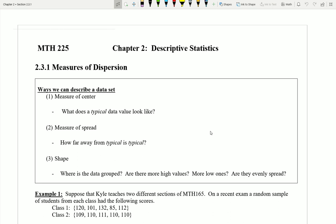In section 2.3.1, we're going to start to talk about other ways that we can measure a data set. Now we talked about these three ways that we can describe a data set in the last section. We talked about the idea of a measure of center. What does a typical data value look like? This was covered in section 2.2. We also talked about shape back in section 2.1, but in section 2.3.1, the section we're currently in, we're going to talk about this idea of measure of spread.